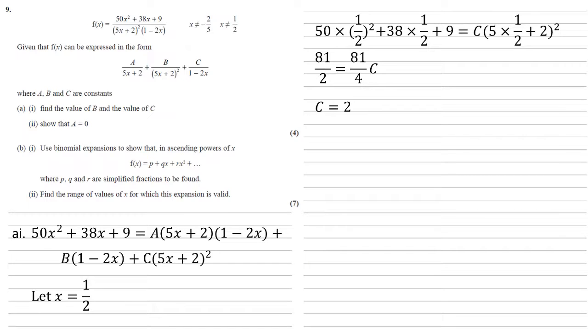If we do the same thing with the 5x plus 2 brackets, so we're going to let x equal minus 2 fifths. If that's the case then 5x plus 2 becomes 0, all we're left with is the b part.